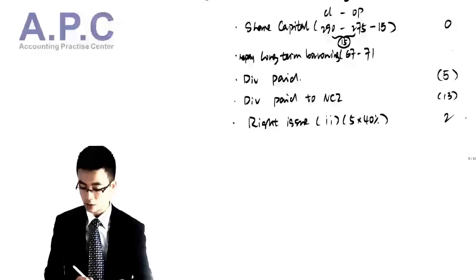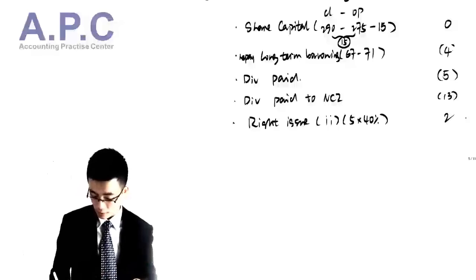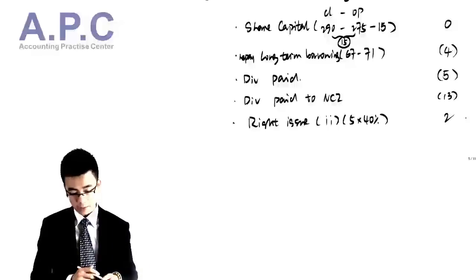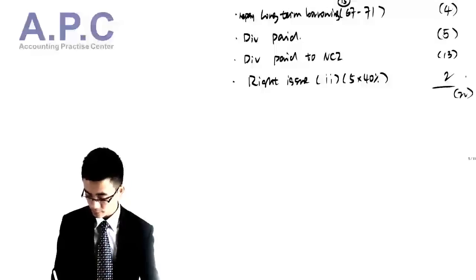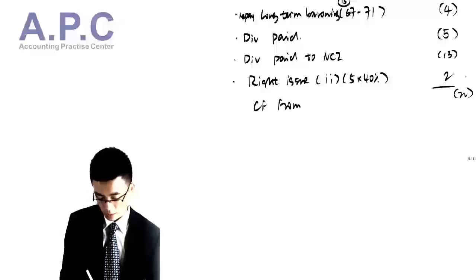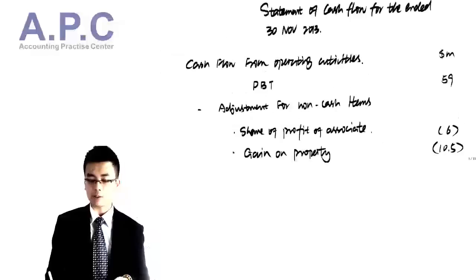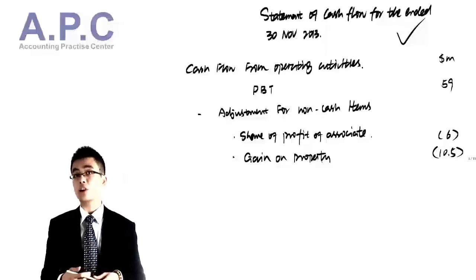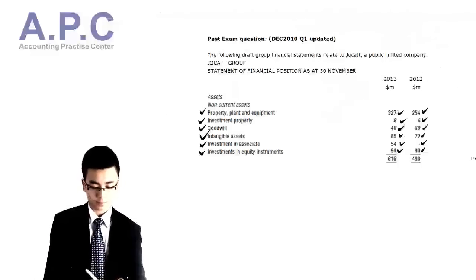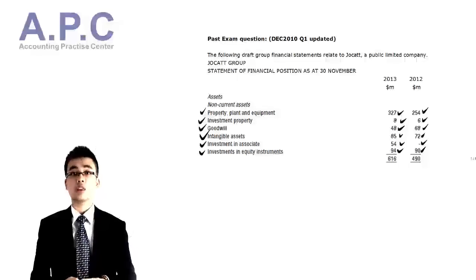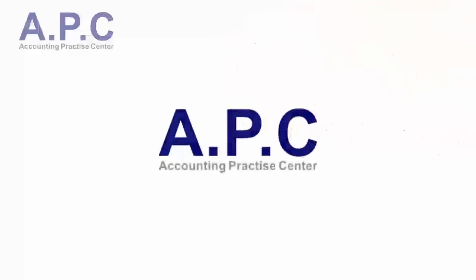Cash flow from financing activities: share capital issued for cash: 0. Dividend paid to controlling interest: minus 5. Long-term borrowing repayment: minus 4. Dividend paid to NCI: minus 13. Rights issue from NCI: plus 2. Net cash flow from financing activities: minus 20. This completes the statement of cash flow question for December 2010, question number 1 — statement of cash flows under IAS 7. Thank you for watching, and make sure you watch the recordings again.